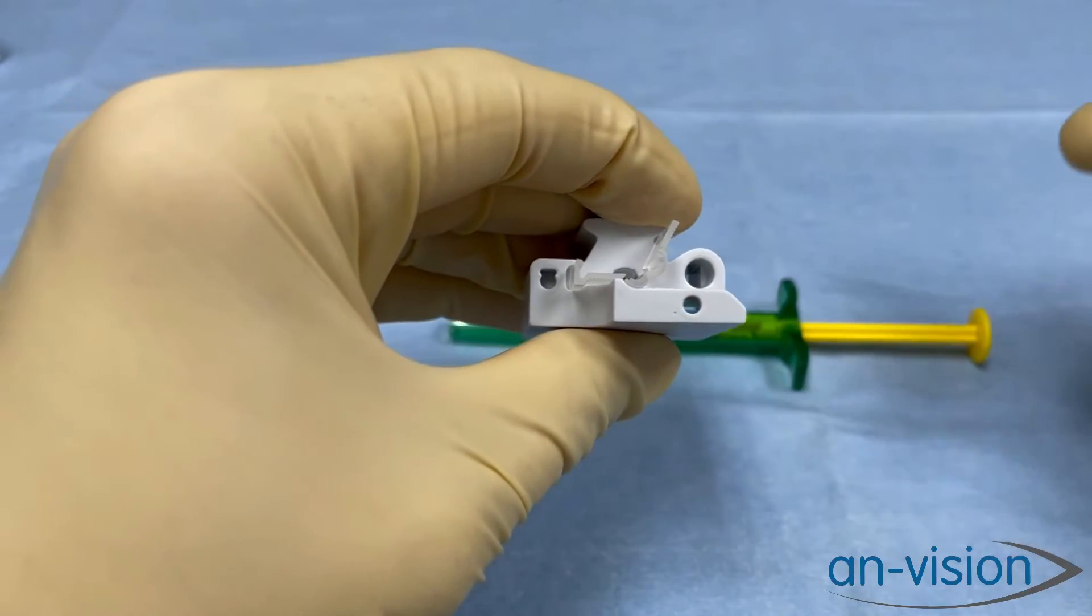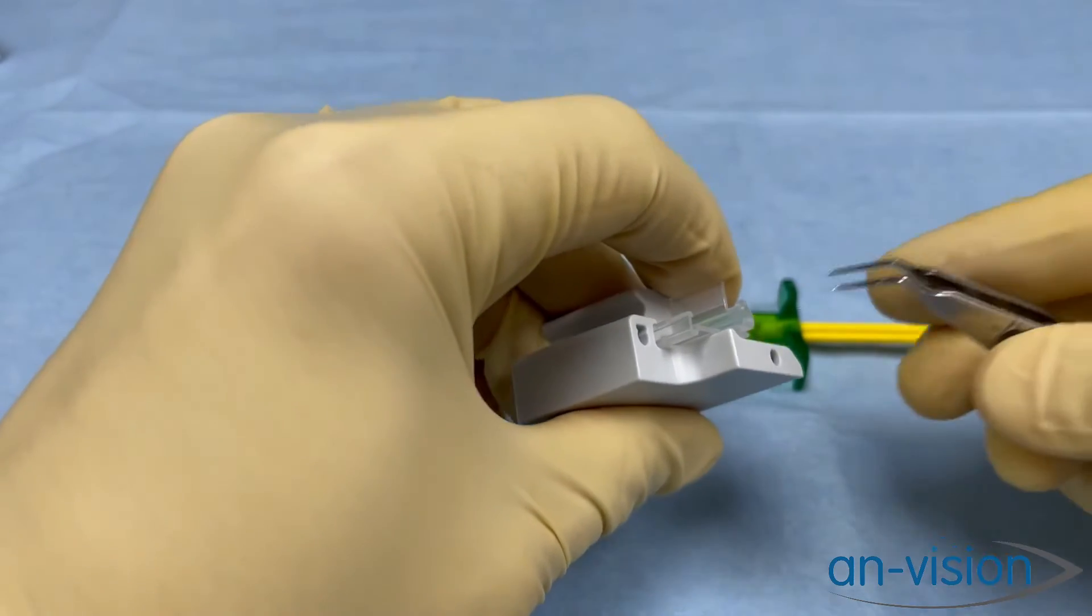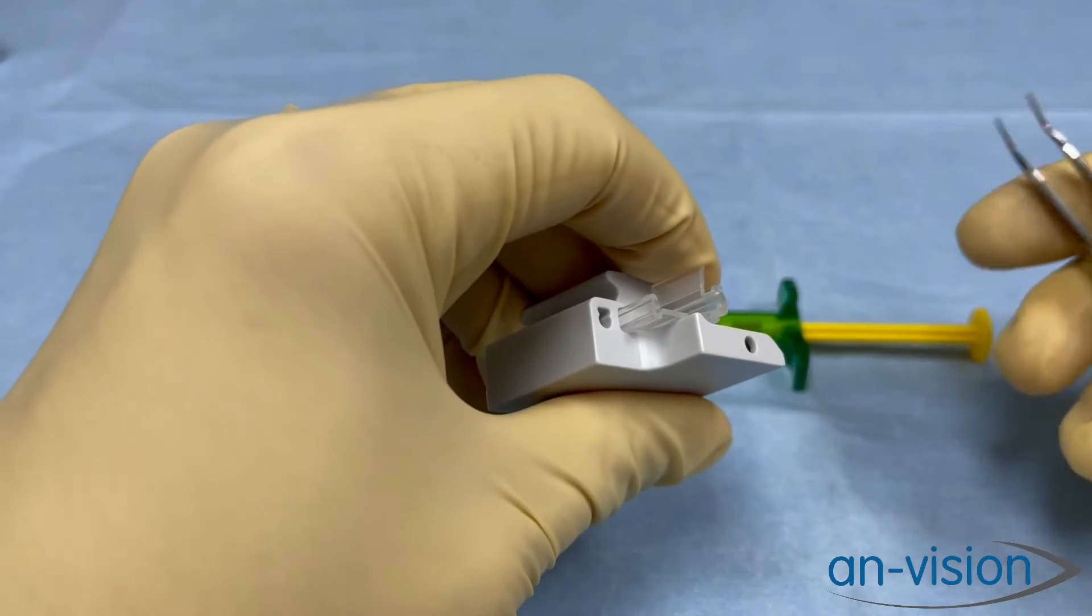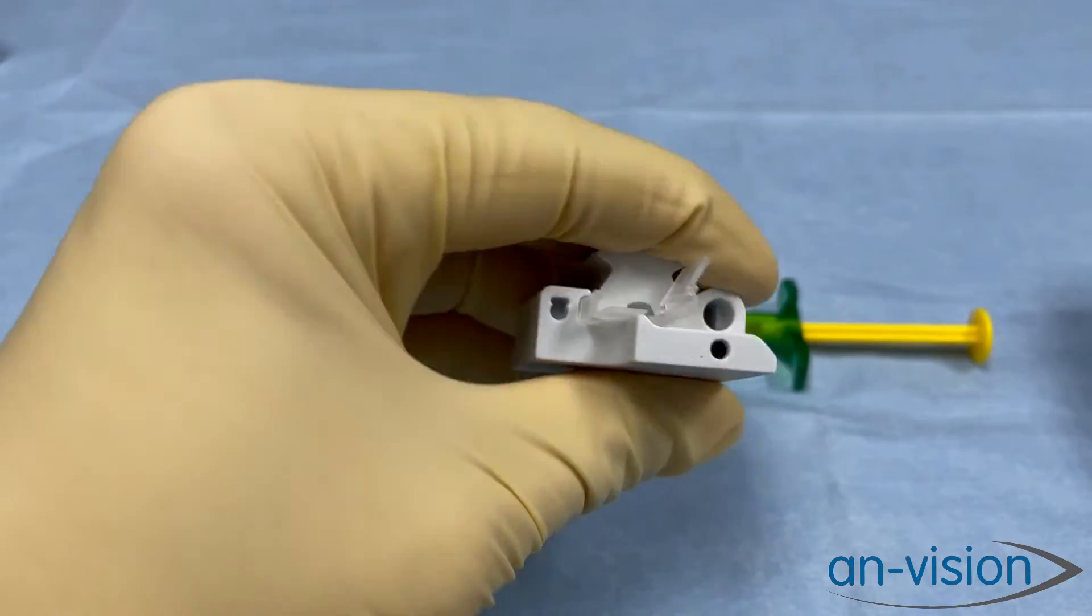so the IOL doesn't float up and become trapped between the two flaps and rip as we inject it in the eye.